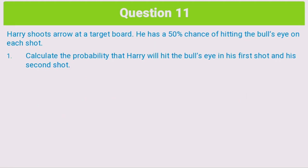We are told that Harry shoots an arrow at a target board, and every time he shoots an arrow, he has a 50% chance of hitting the bullseye. Question 1 asks us to calculate the probability that Harry will hit the bullseye on his first shot and his second shot. This is quite a simple question, worth 2 marks, and all we need to do is multiply some probabilities.